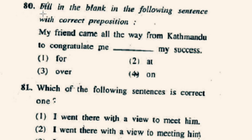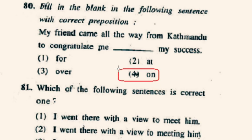Question number 80: Fill in the blank with the correct preposition — 'My friend came all the way from Kathmandu to congratulate me ___ my success.' The correct preposition will be 'on.' My friend came all the way from Kathmandu to congratulate me on my success.